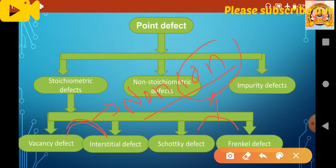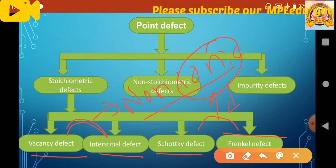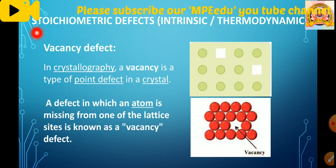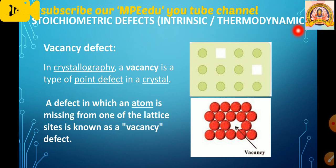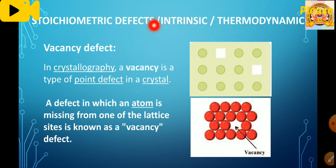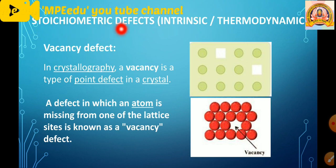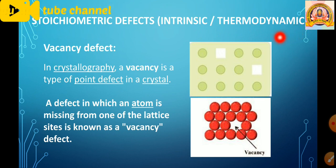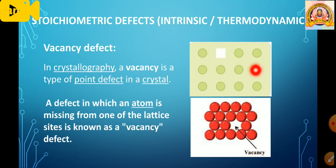Such type of defect is known as stoichiometric defect. The stoichiometry of the solid is not disturbed and electrical neutrality is maintained. Electrical neutrality means however many positive charges are present, the same number of negative charges remain. It may be different ions or even an electron — suppose one anion is missing and in its place one electron occupies the negative position, then neutrality is maintained.